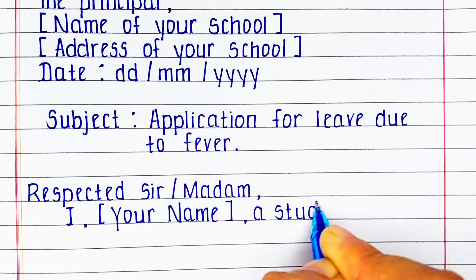The whole sentence reads: 'I, [your name], a student of class [your class], roll number [your roll number], am writing to inform you that I was unable to attend school on [date of absence] due to high fever.' For example: 'I, Sneha Yadav, a student of class 6, roll number 2, am writing to inform you that I was unable to attend school on 16th of October, that is Wednesday, due to high fever.'